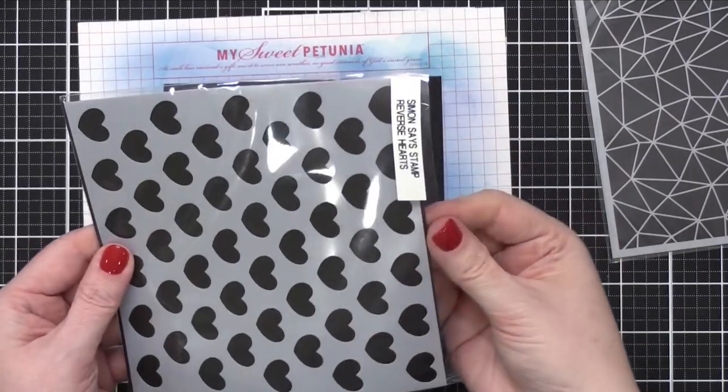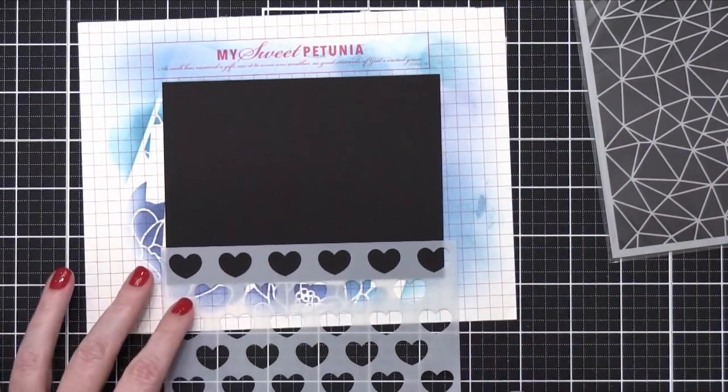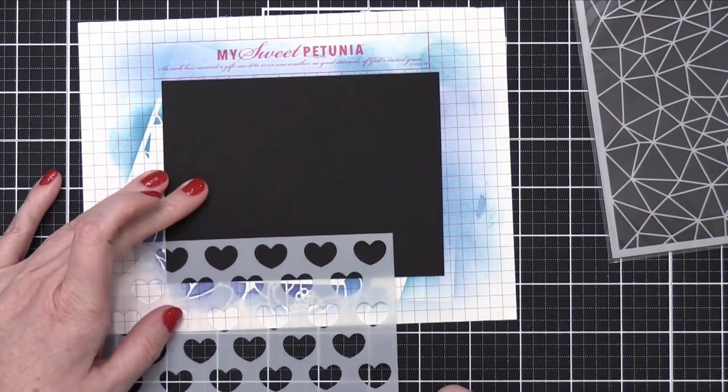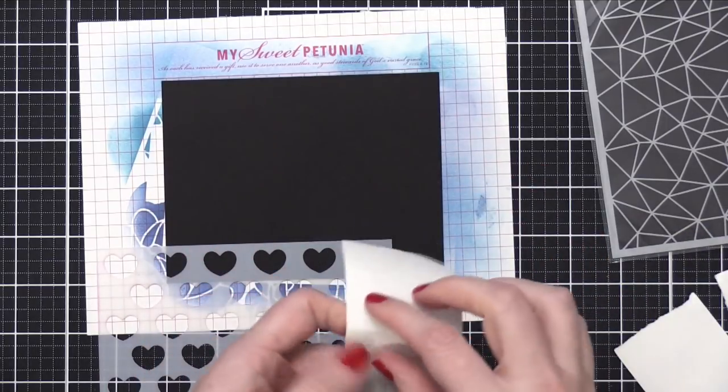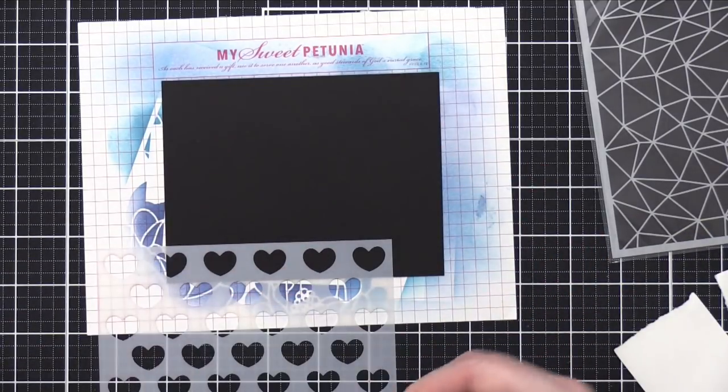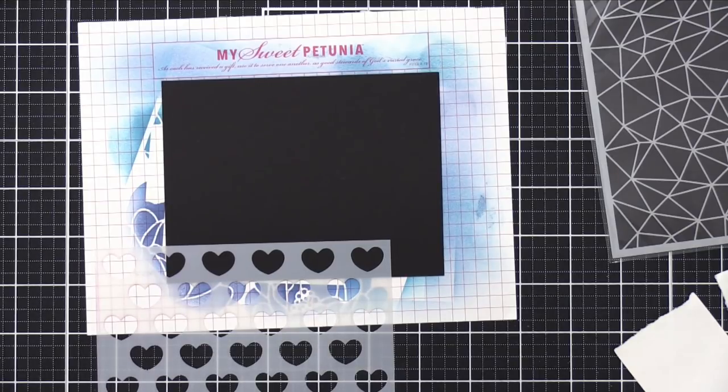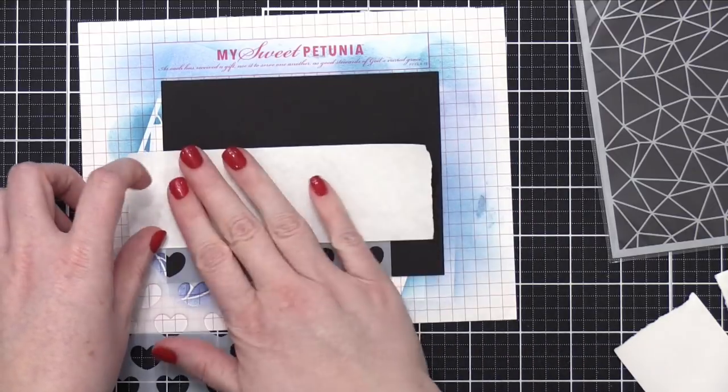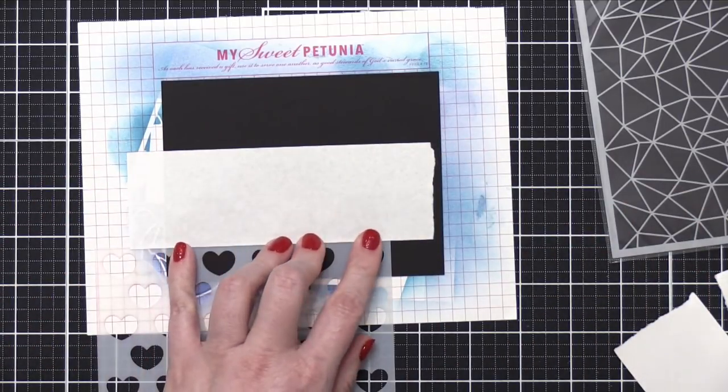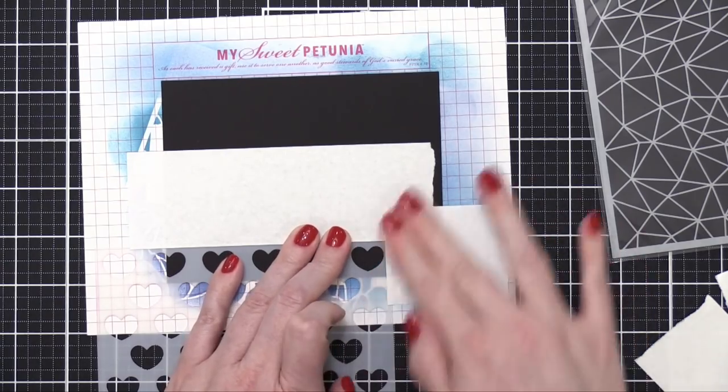First going to start out with some black cardstock from Hero Arts, and I'm using that Reverse Heart stencil in a little bit of a new way. I'm going to be masking off just this one row, and so I'm going to be putting some VersaMark ink on top, and I don't want it to go beyond that row, so I'm going to use some of my masking paper. I trimmed this down last week for one of the other projects, and so I had this strip left over, and I thought I'll go ahead and use it.